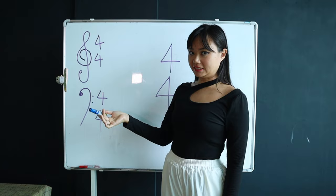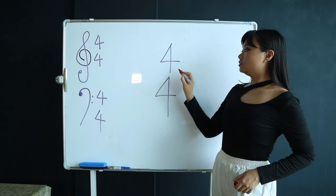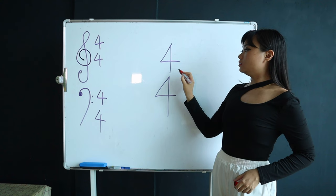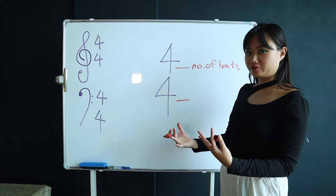There are gonna be two numbers that you're gonna see at the side of each clef in the sheet music. These are called time signatures. Time signatures tell us how to count or play a song. The number on top tells us the number of beats in a measure. The number at the bottom tells us the type of beats that we should be counting.